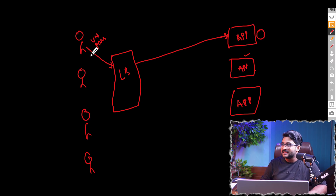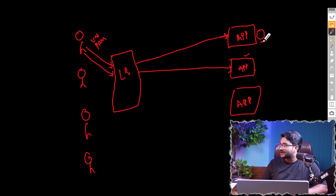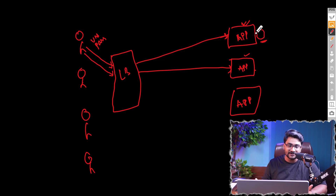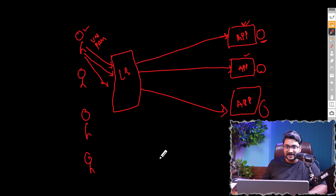Now when the user sends another request, the load balancer dispatches it to a different instance. But the session was created on the first machine only. If the request goes to the same machine, it can see the session and knows the user is valid. But if it goes to a newer machine, the user needs to authenticate again. This repeats every time the request hits a new instance — so for session-based authentication, the round robin technique does not work.